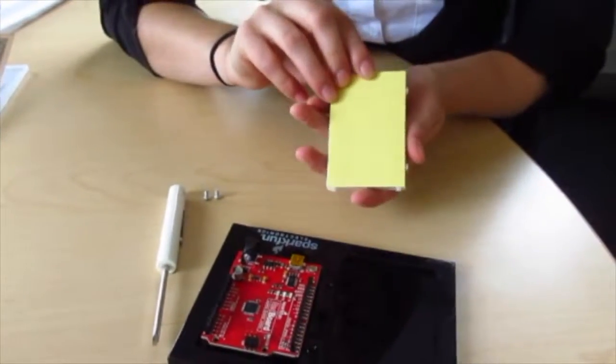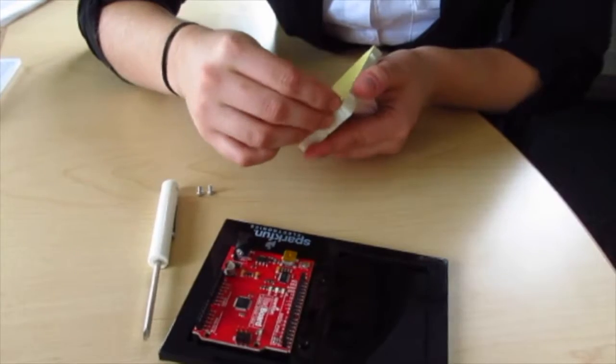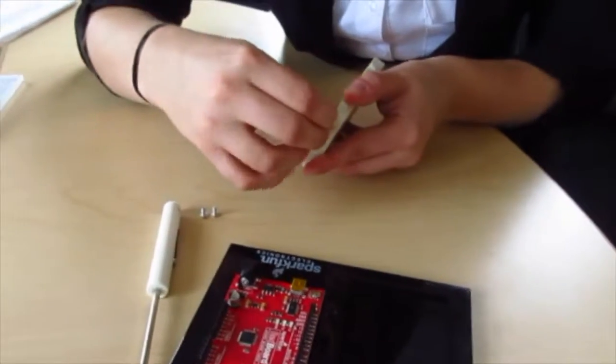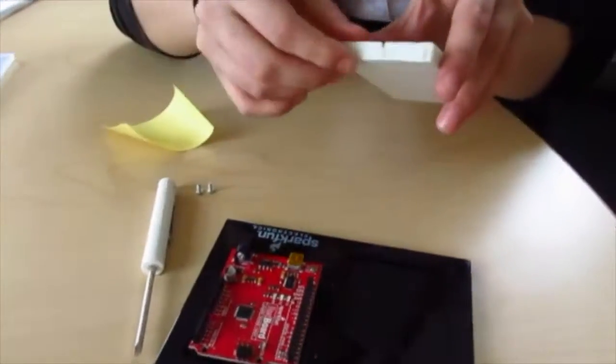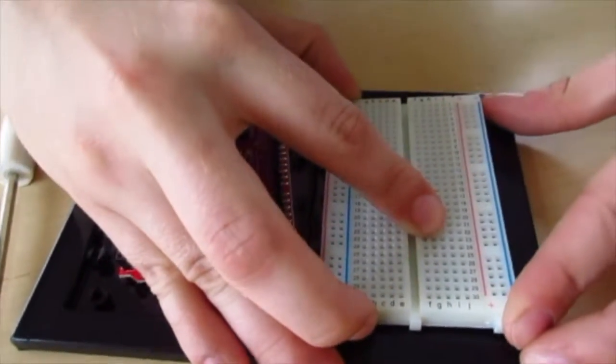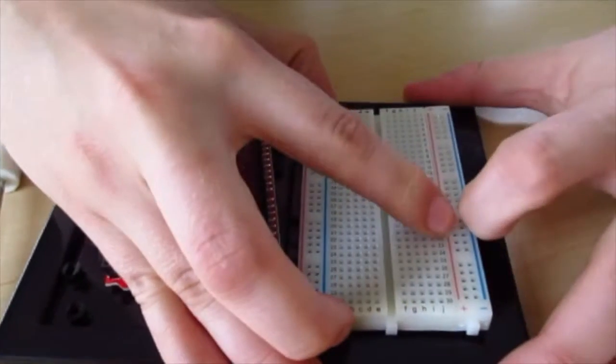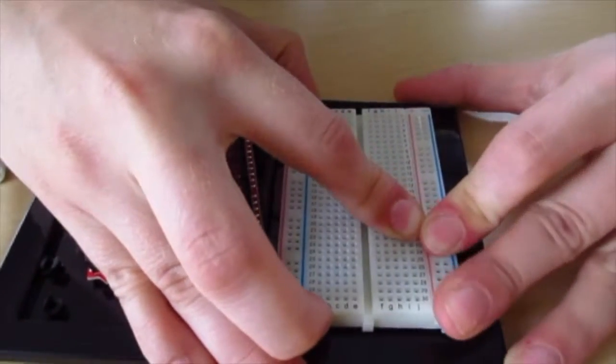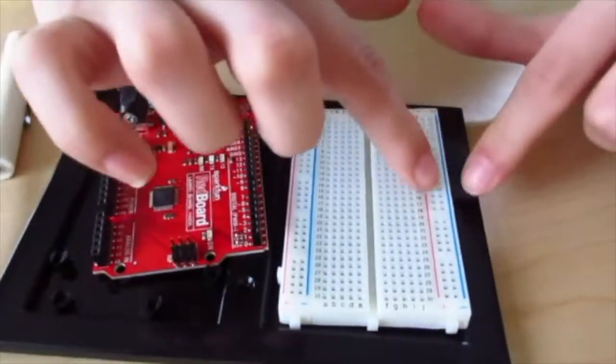The back of your breadboard has a peel off sticky side that allows you to very easily set the breadboard directly on the plate. Be careful as to not get it off of the side.